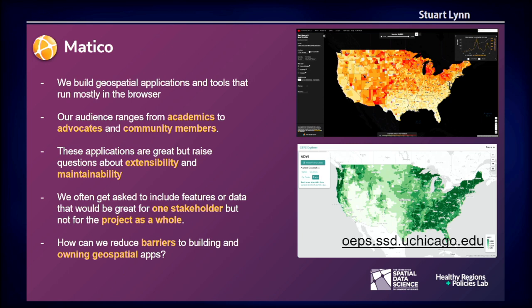We do a lot of in-browser analytics and in-browser processing, but that comes with a problem. We have a team of people where only two of us are developers, and so we only have so much bandwidth to update and maintain the applications that we build. What we're focusing on with Matico is building out tools that allow people to maintain and take ownership over applications like this themselves.